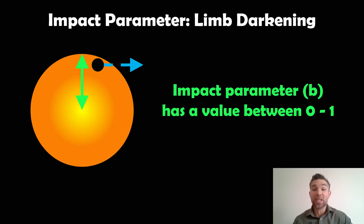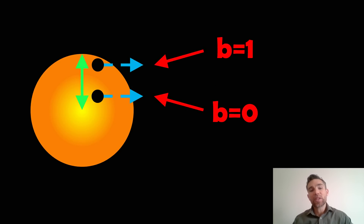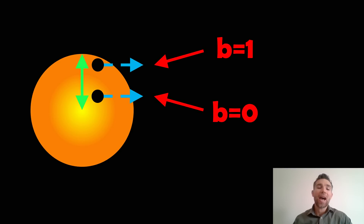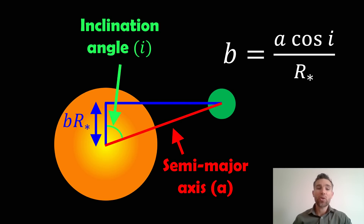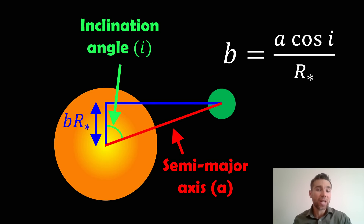The impact parameter has a value between zero and one depending on where the planet transits, and it's normalised to the radius of the star. If it's at the outer edge, B equals one; if it's towards the centre, B equals zero. We've also got the inclination angle I, which is the inclination of the planet's orbit with respect to our line of sight.